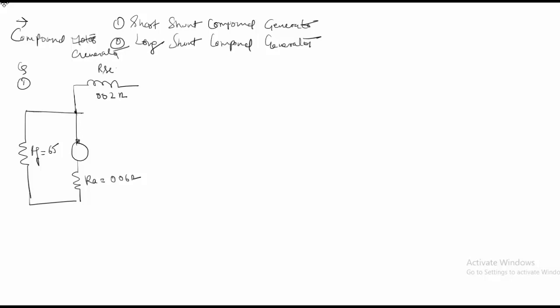So in a short shunt, the armature or the series field will have the full load current, while in a long shunt it will be exposed only to the armature current. So this is the supply voltage V and this is the voltage generated EG.